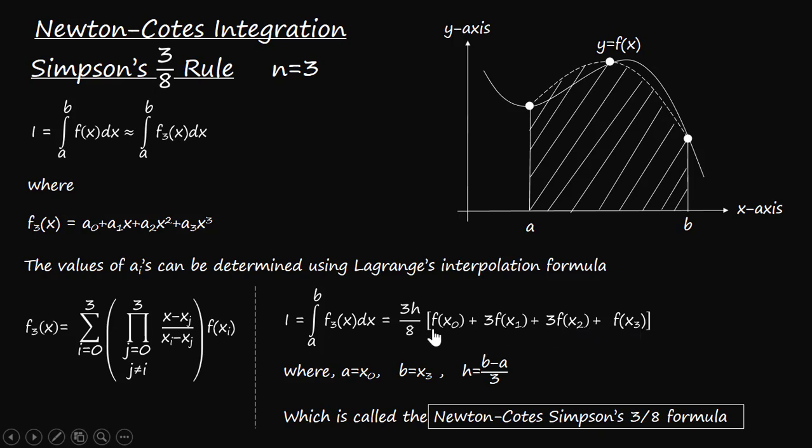Here we have to note that this point x_0 is the first point and that is considered as a point. The last point x_3 is considered as b point, and the difference between these values x_0, x_1, x_2, and x_3, which is equal distance, that is represented as h. So the formula to calculate h is b minus a divided by 3.